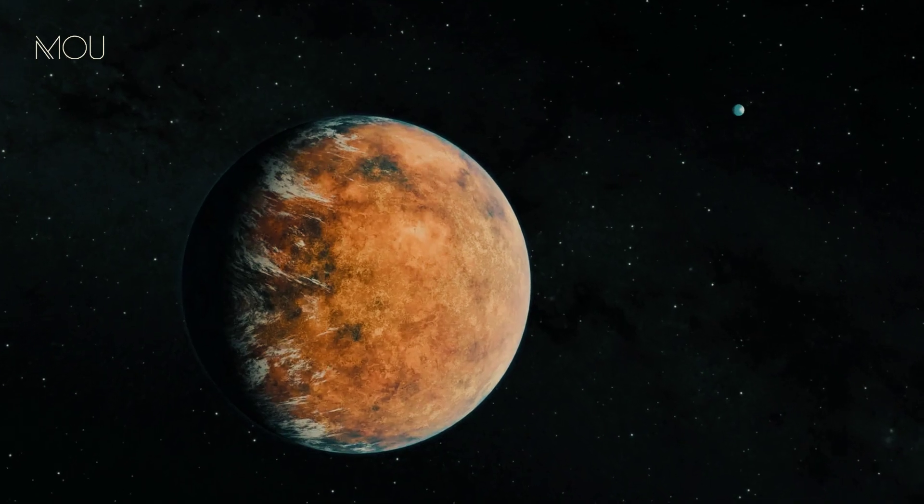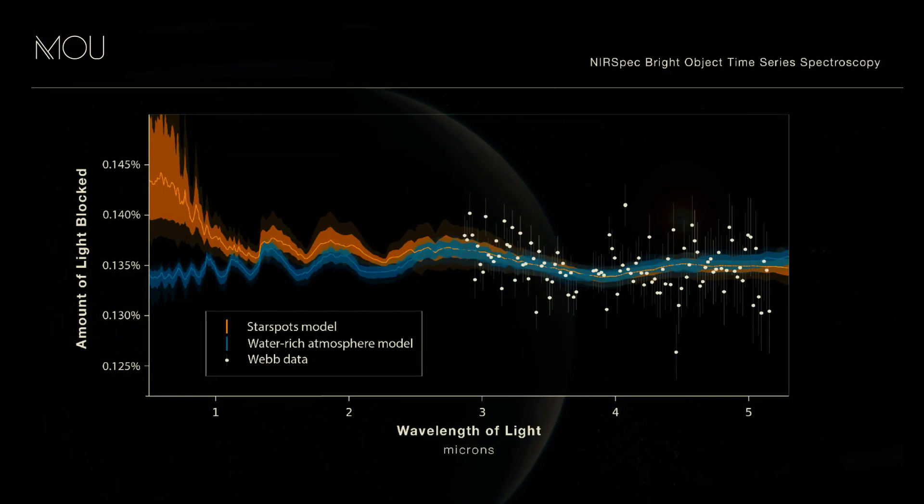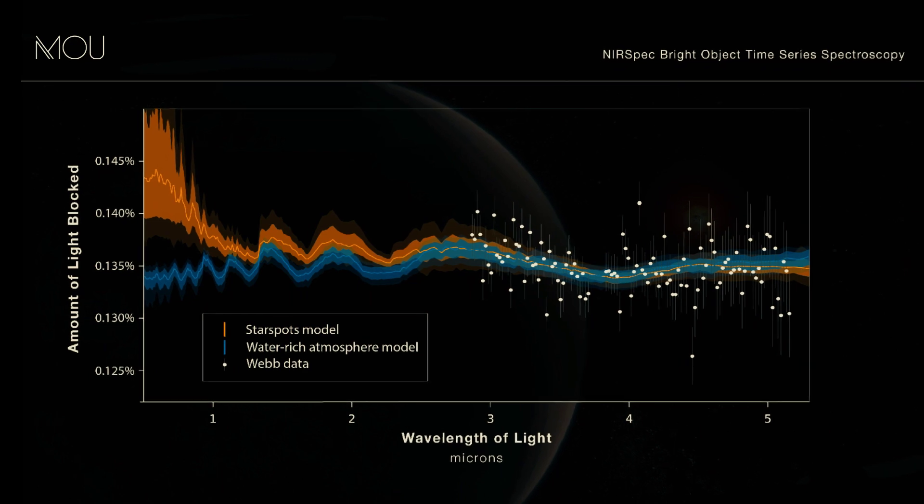In recent news, the scientific team behind the Webb Space Telescope has observed rocky exoplanet GJ486b and detected possible hints of water vapor in its atmosphere.